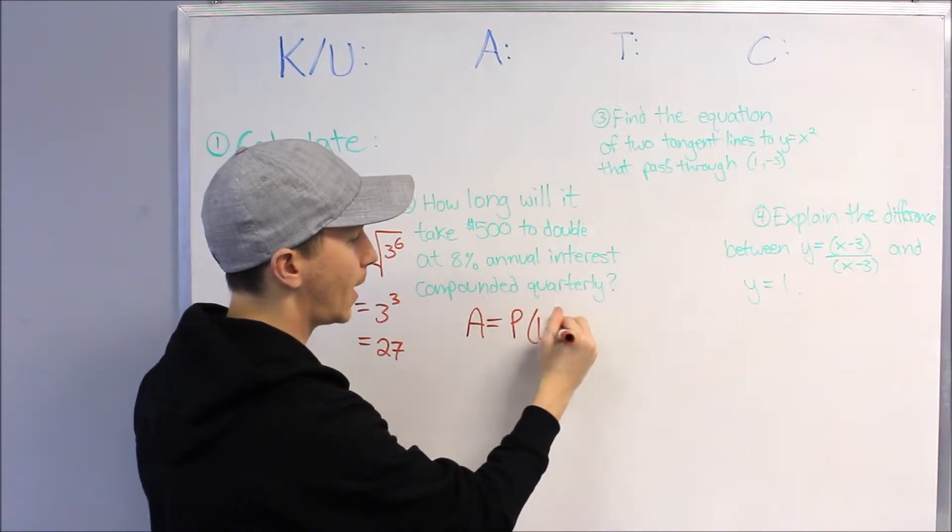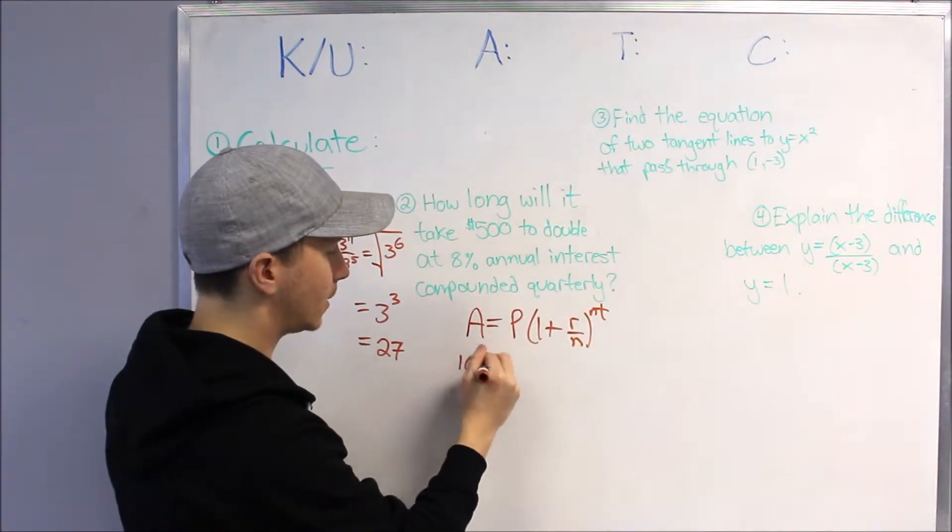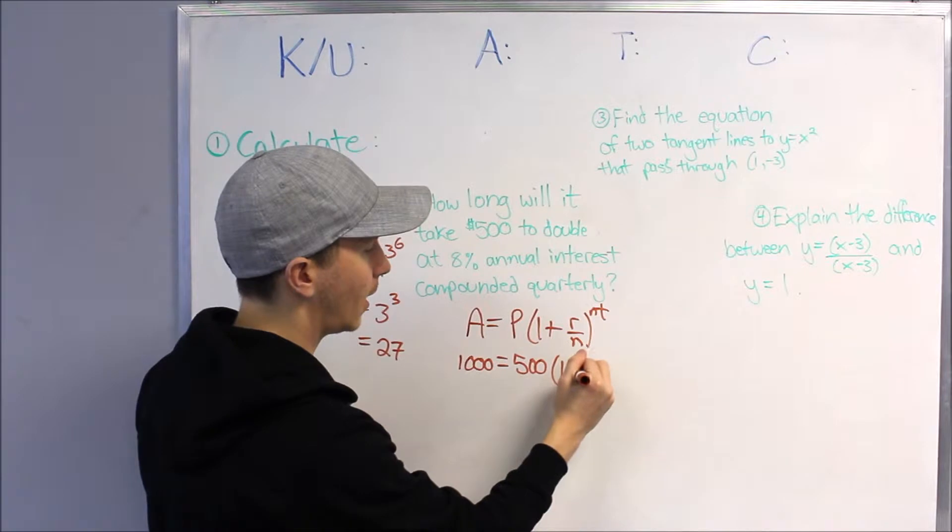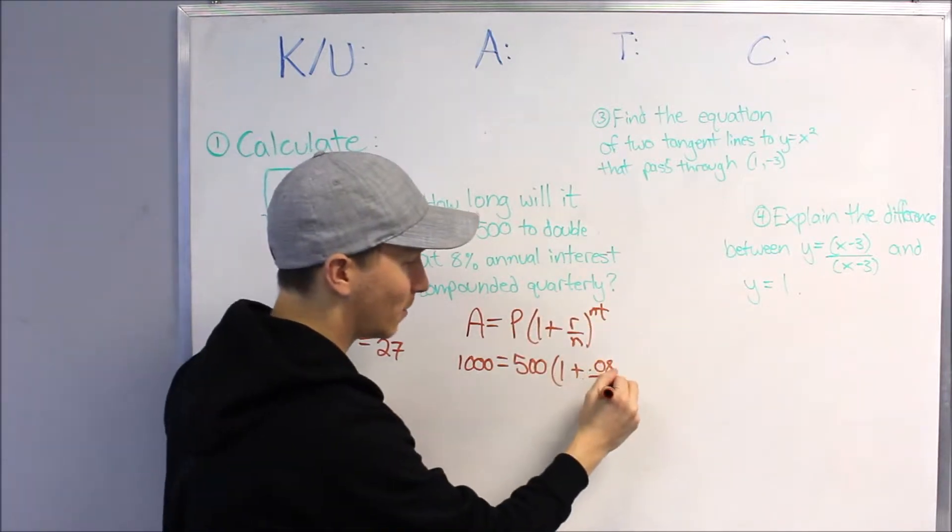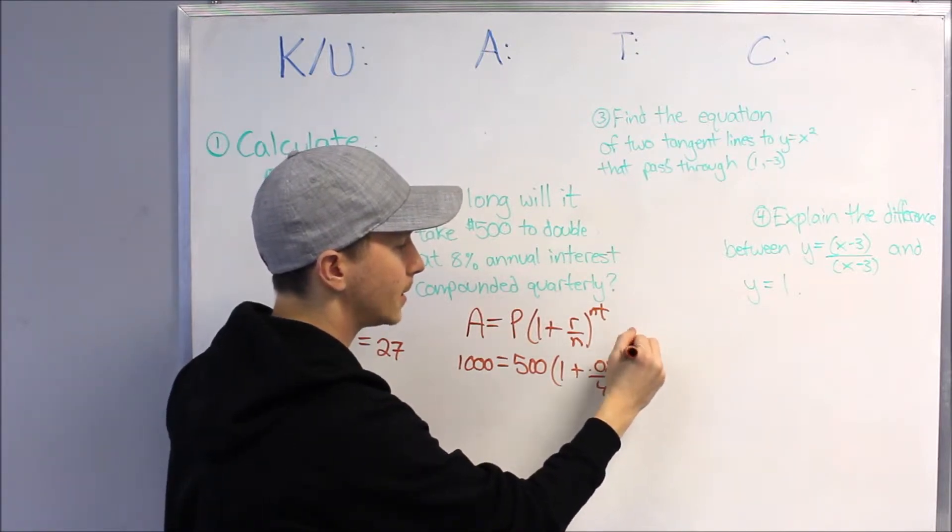So how long will it take $500 to double at 8% annual interest? So if we know our formula, we can use that: A = P(1 + r/n)^(nt), and you could say it needs to grow to $1000 from $500 principle at 1 plus .08, that's the interest. It's compounded quarterly, so we're dividing by 4, and then 4 times t.